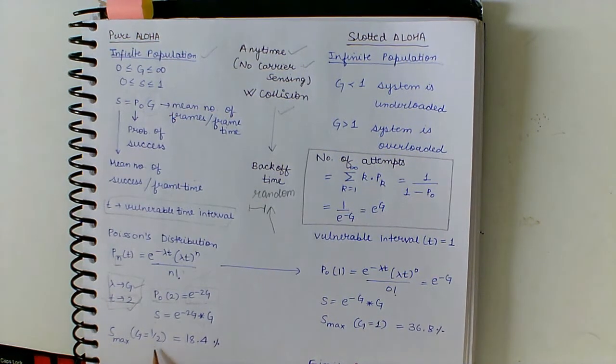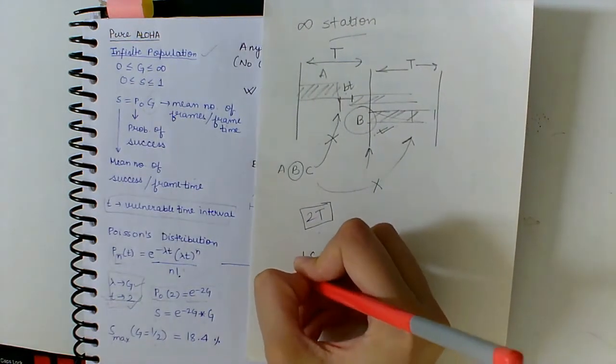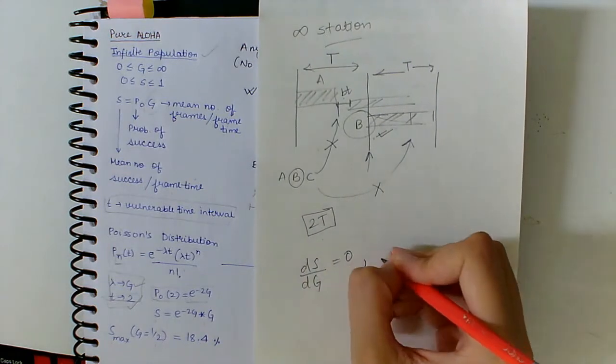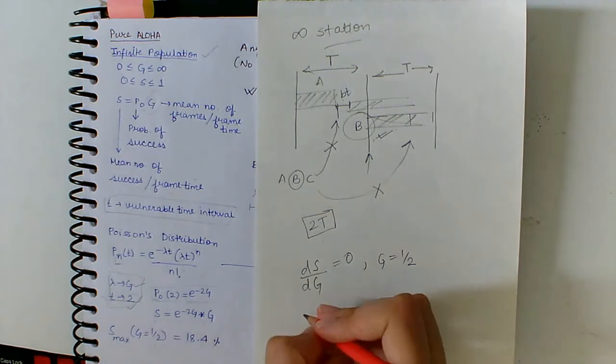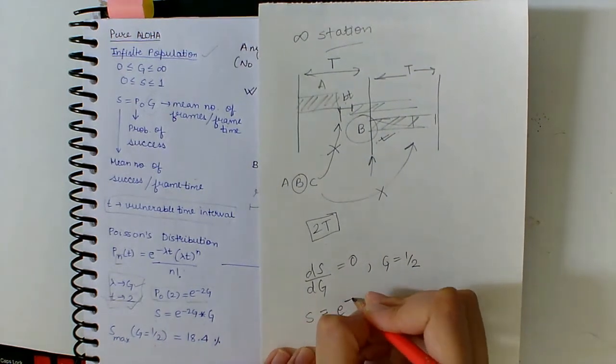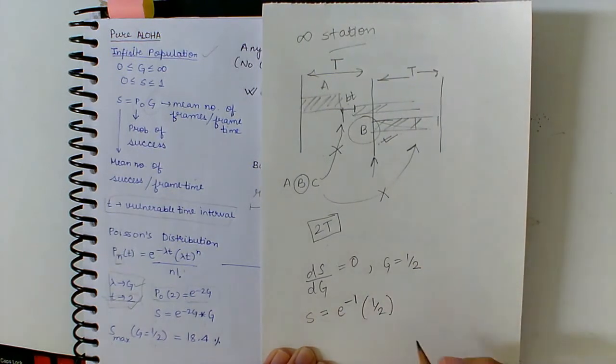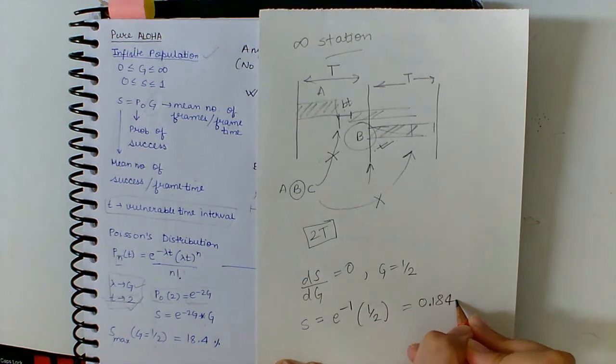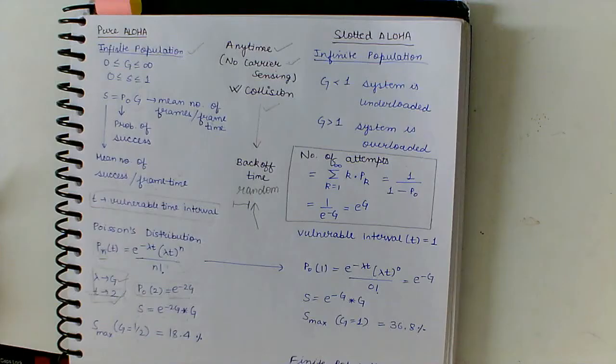So Smax is when G equals 1/2. We can calculate this by doing dS/dG and making it equal to 0. So we find the value of G equals 1/2, so S equals e to the power minus 1 times 1/2, which gives the answer as 0.184, that is 18.4%.